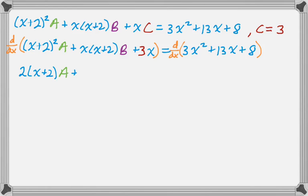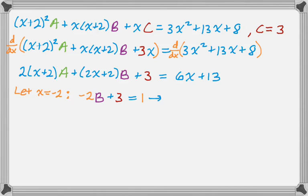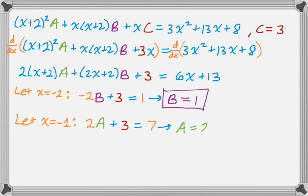So I get 2 the quantity x plus 2 A. If you consider the coefficient of b to be x squared plus 2x, then you can see that the new coefficient when you take the derivative is going to be 2x plus 2 B. And then the derivative of 3x is 3. And then 6x plus 13. So looking at this, I can do two clever substitutions. So if I let x equal negative 2, that'll give me the value of b. So I know b is 1. And if I let x equal negative 1, that'll give me the value of a. So I get 2A plus 3 equals 7. So I know that a is 2.